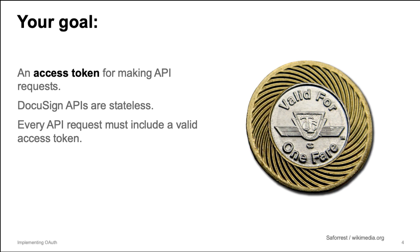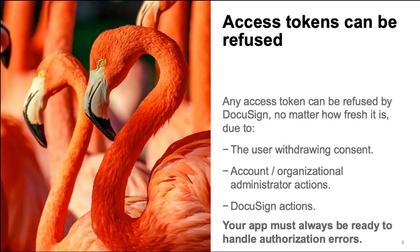Your application needs a token for every API call it makes to a DocuSign API provided by our cloud platforms. Please note that your application should be written defensively. There are multiple reasons why an access token can be refused by DocuSign — for example, a user withdrawing consent from your integration key. While it is possible for DocuSign to cancel an access token, that would only happen in an extraordinary circumstance. If a token is refused, your application should discard it and create a new one.